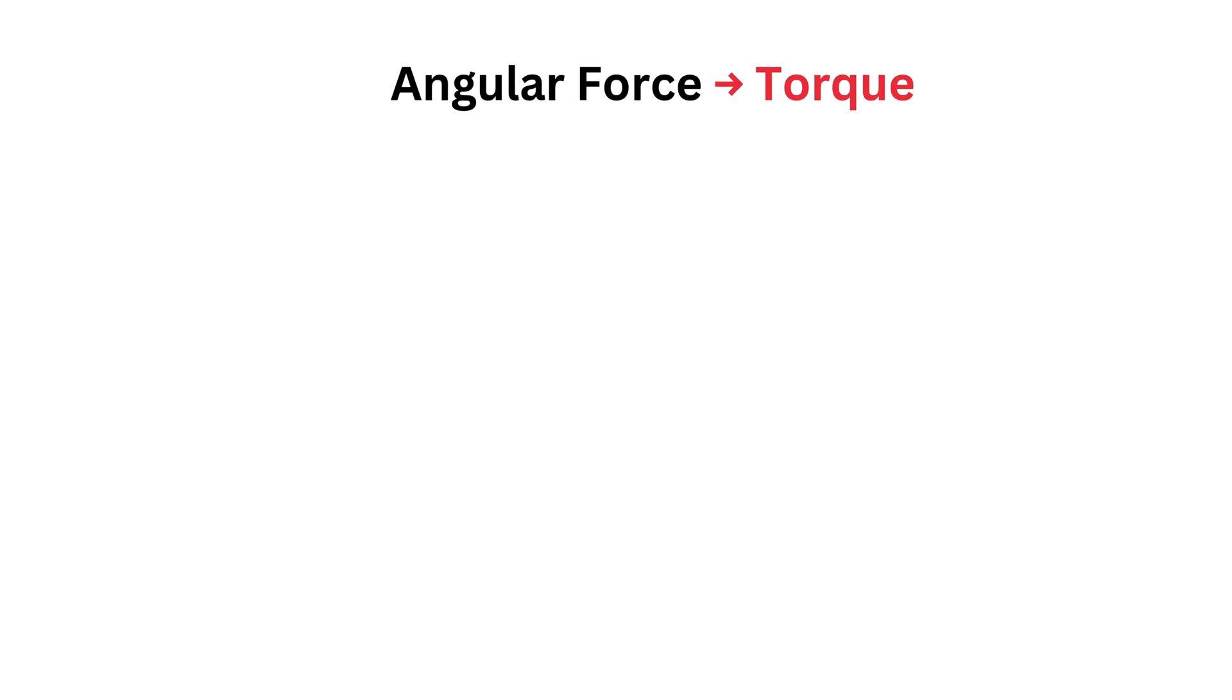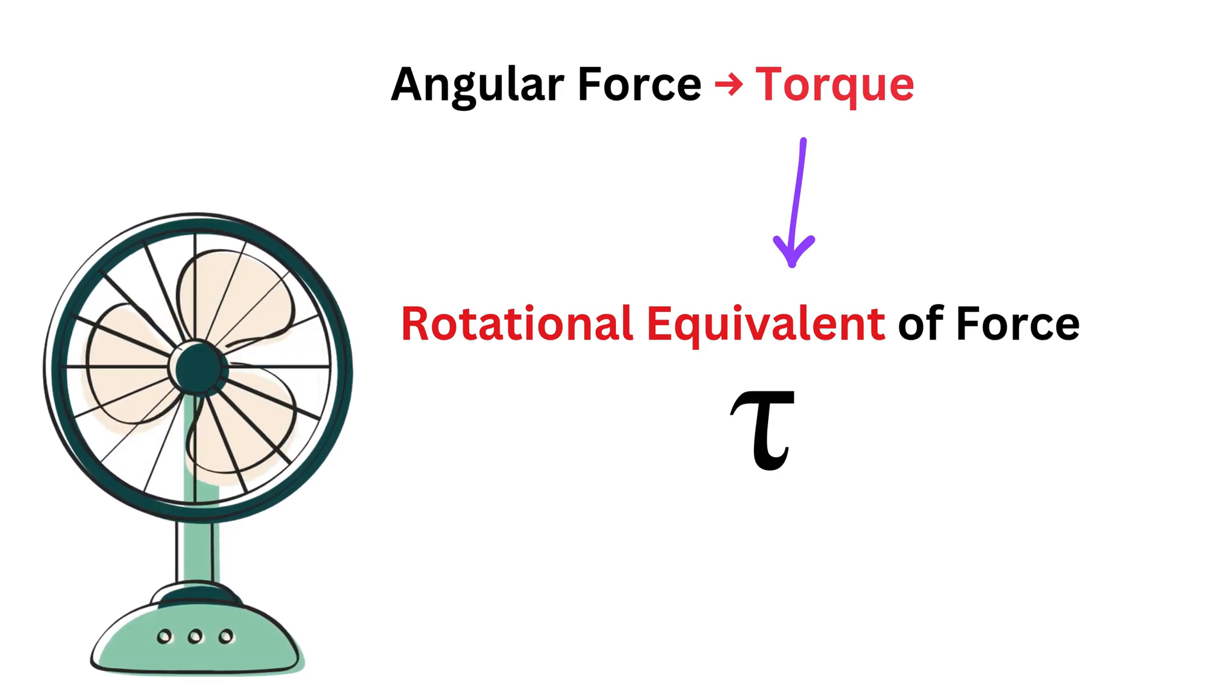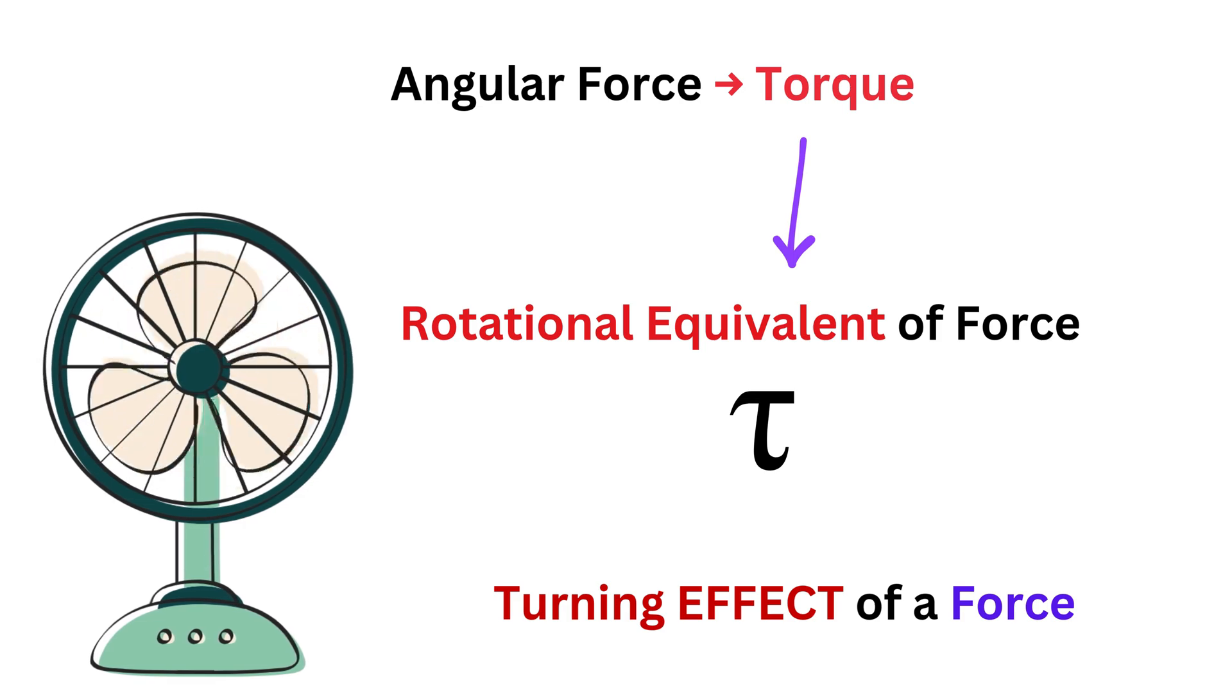Torque, which is described by the Greek letter tau, often described as the rotational equivalent of force, is what causes a rigid body to rotate about an axis. Torque is basically the turning effect of a force.